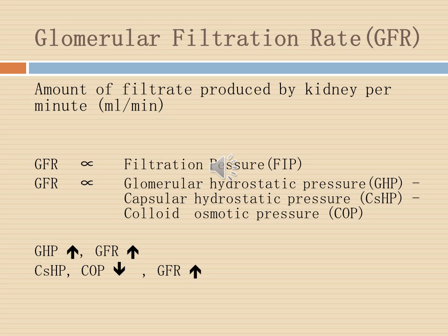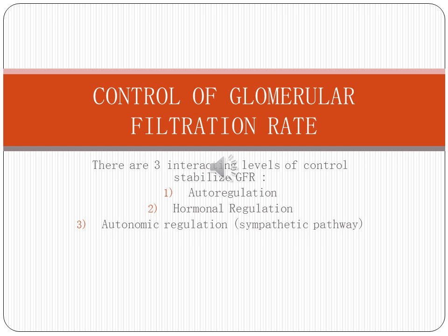GFR is the amount of filtrate produced by the kidney per minute, measured in milliliters per minute. GFR is directly proportional to filtration pressure. When glomerular hydrostatic pressure increases, GFR will also increase. Whereas for capsular hydrostatic pressure and colloid osmotic pressure, when they decrease, GFR will increase.